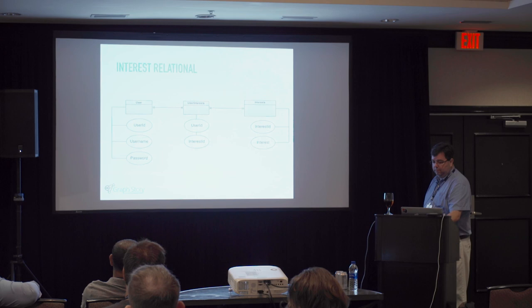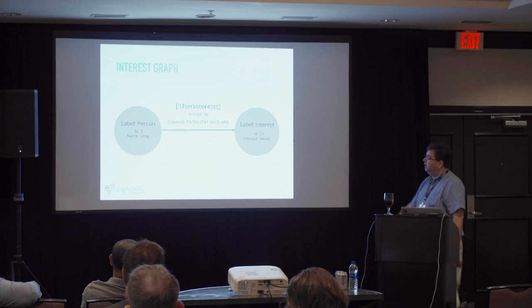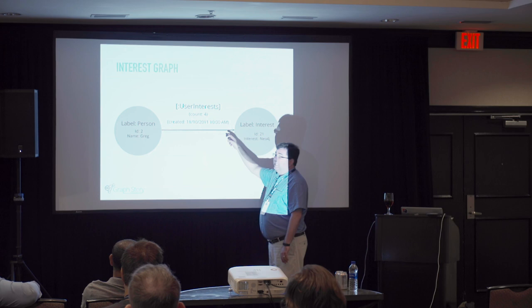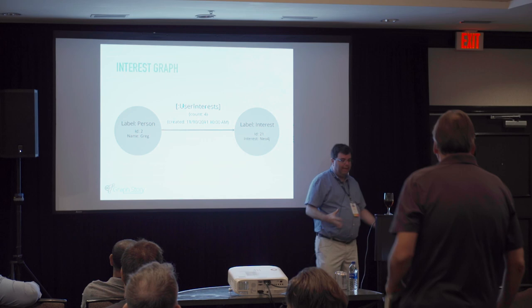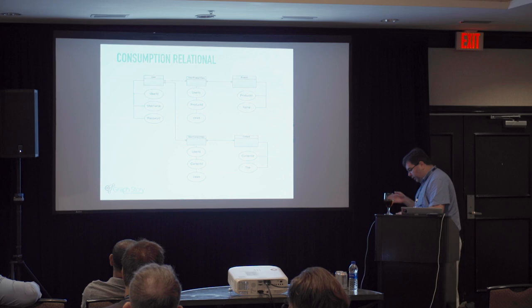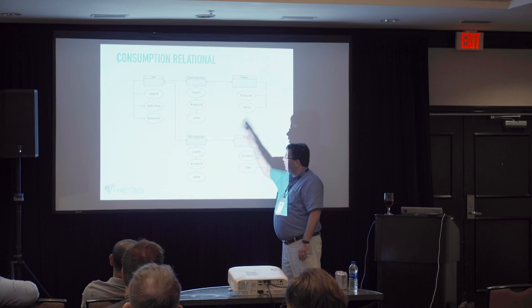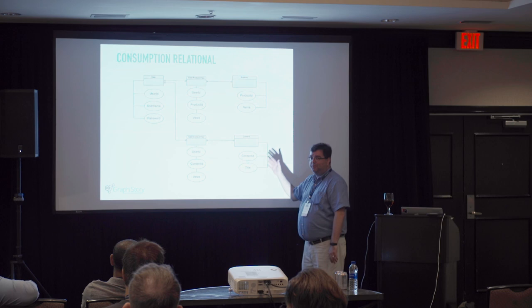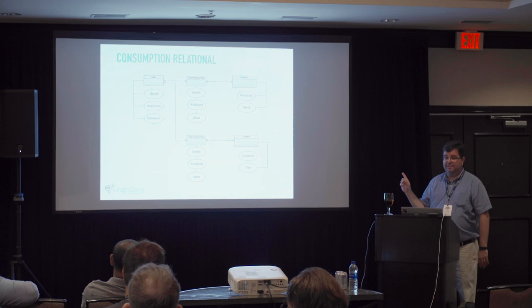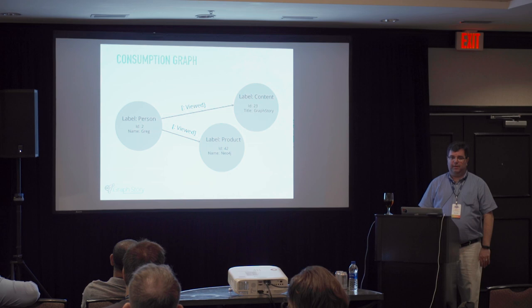Look at the models. In a graph, you have a person connected to an interest — that's it. You can see where I start to put properties on the relationship, like how many times they looked at something and when the connection was created. Consumption is when you go look at a product or a piece of content. In a relational system you'd have a product table, a content table, a user-product-view join table, and a user-content join table — two extra tables just to connect two different things.